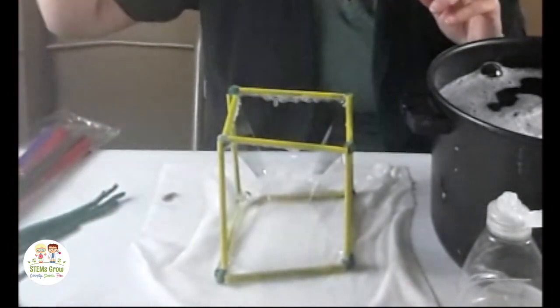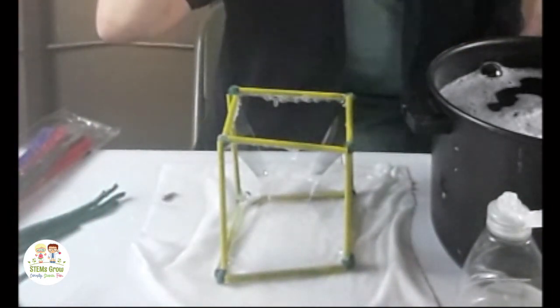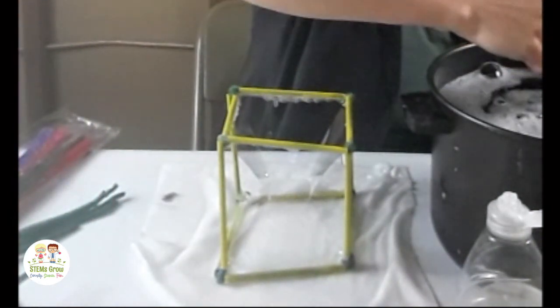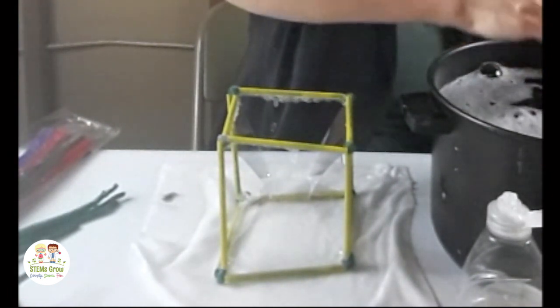But that's not the square bubble we're looking for. We're going to take our bubble wand or another straw to blow a bubble in the middle, and it's going to create a square bubble inside that frame.